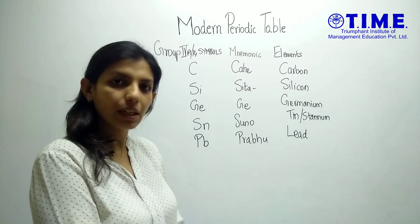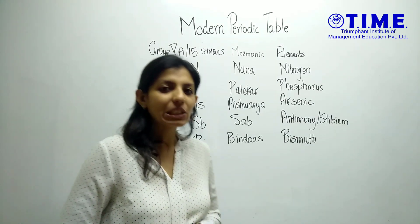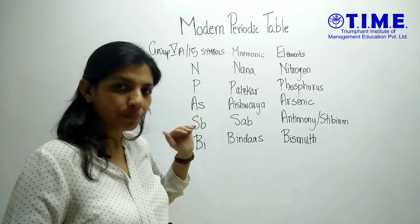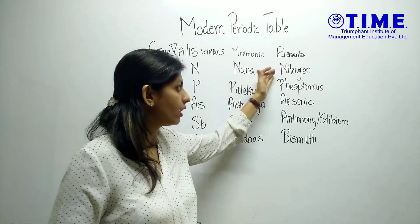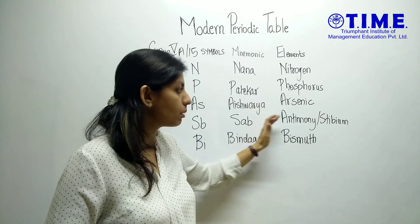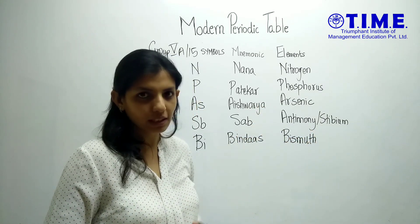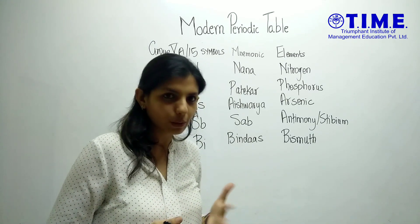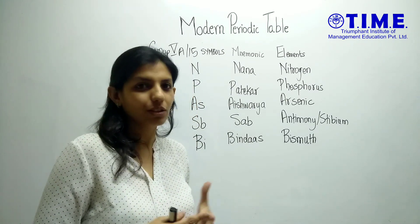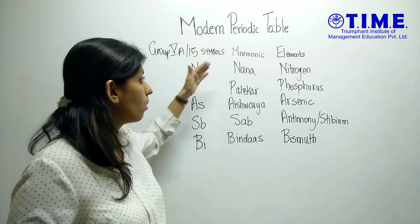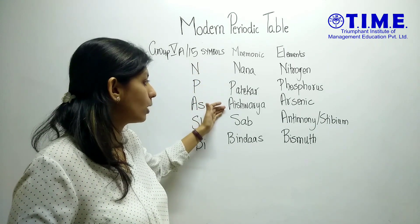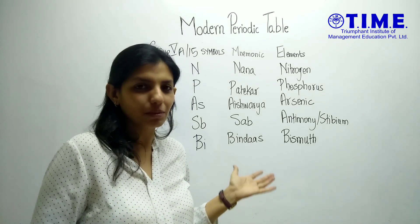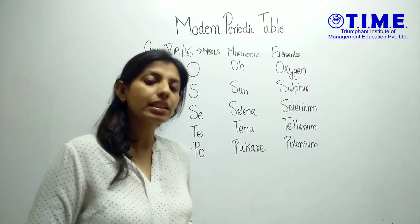Now let's look at the mnemonics for Group 5A or Group 15. The elements in this group are nitrogen, phosphorus, arsenic, antimony (stibium) and bismuth. The mnemonics here are inspired by Bollywood, so they should be very easy to remember: 'Nana Patekar, Aishwarya, Sabbindas.' Come on guys, this is really simple!